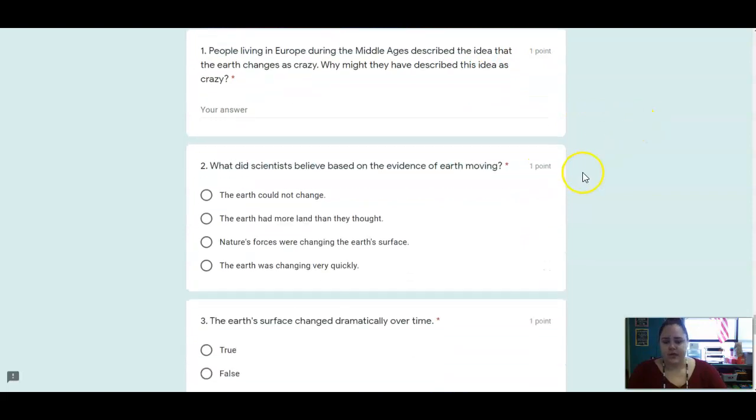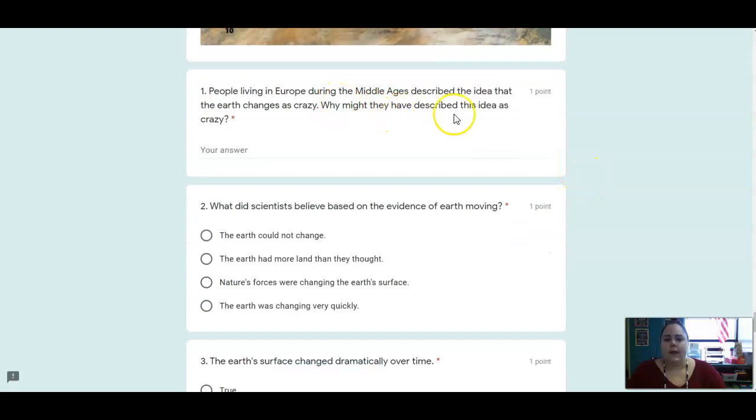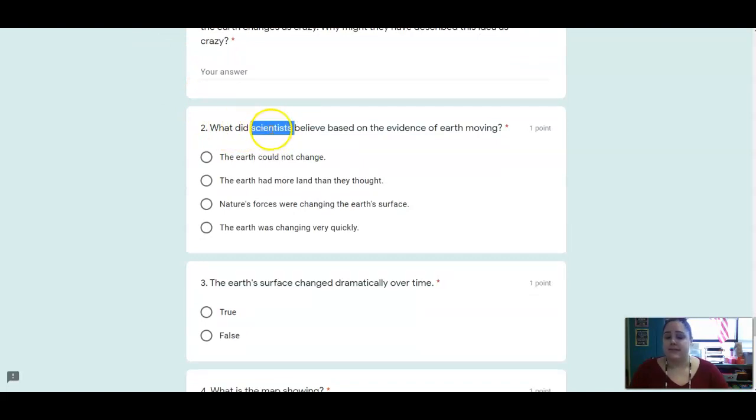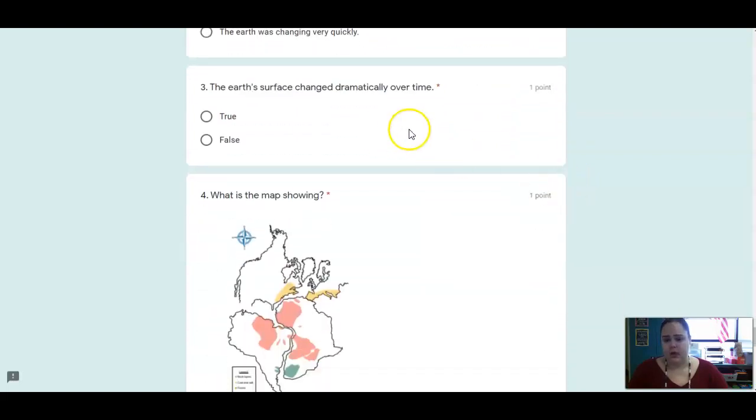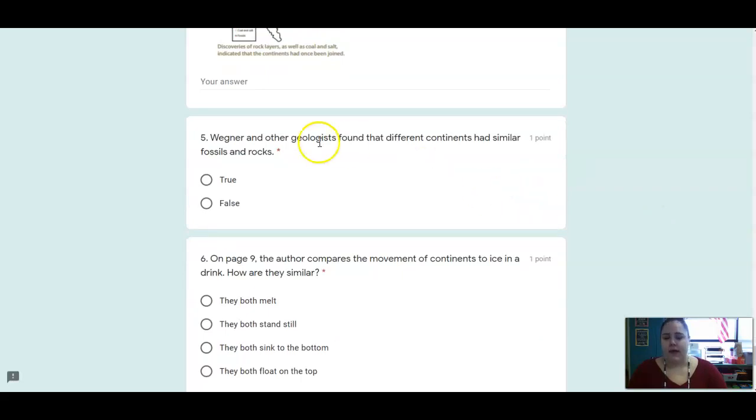All right, so you have a few questions for a reading. Number one asks, why might people have described this idea as crazy? So in the Middle Ages, why do they think that the continents moving is a crazy idea? Number two, what did the scientists believe based on the evidence of Earth moving? Number three is true or false? The Earth's surface changed dramatically over time. Number four, what is this map here showing? Make sure you use the caption to help you. Number five is true or false? Wegener and other geologists found that different continents had similar fossils and rocks.